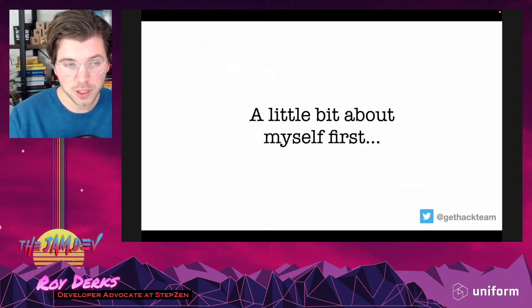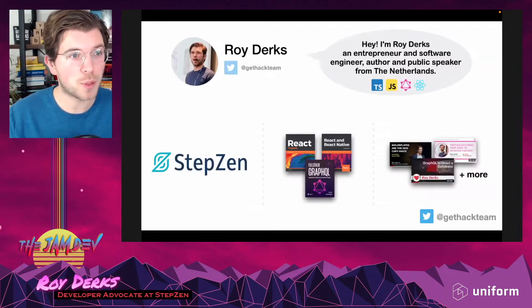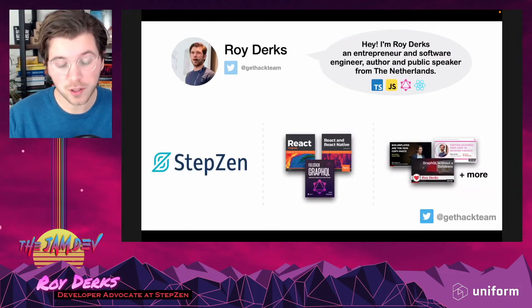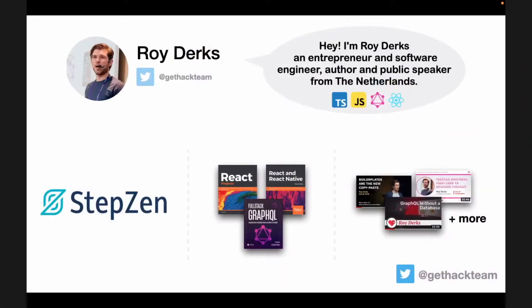A little bit about myself. I'm Roy, I'm from Amsterdam. You can find me on Twitter with the handle @gethackteam. I work with a company called Stepzen, and with Stepzen we want to make GraphQL easier for people and give you a GraphQL API without having to worry about any deployments. I'm also writing books — the most recent one is called Fullstack GraphQL, which you should read to learn how to build fullstack GraphQL applications.